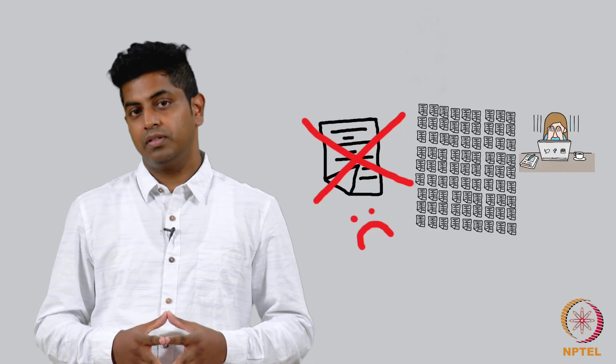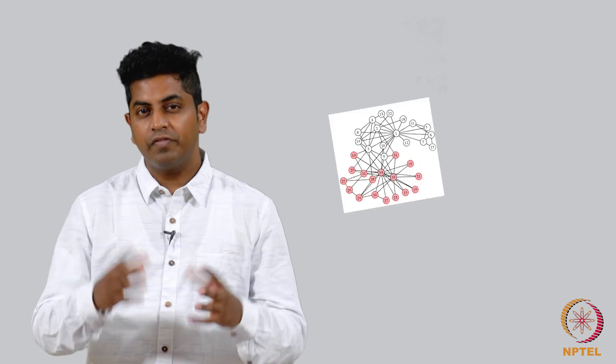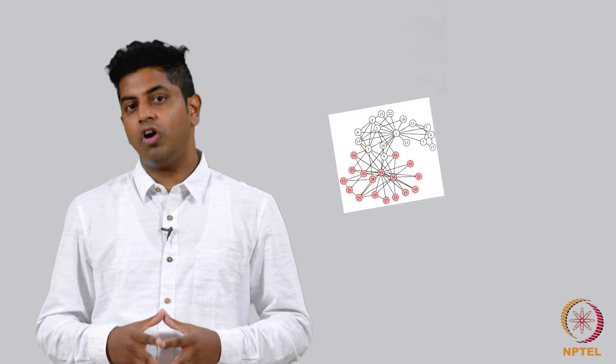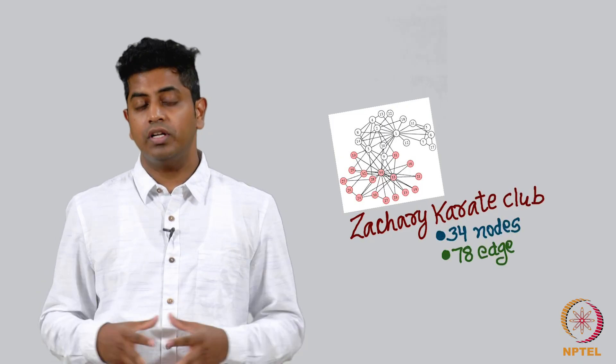For example, there was a time when people looked at the friendship network on 30 to 35 nodes. This is called the Zacharias Karate network. It had some 32 nodes and some edges on it.